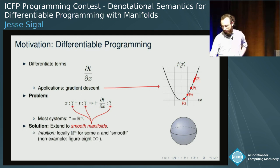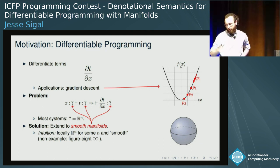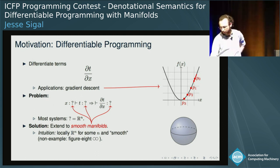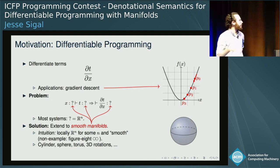Intuitively, what is a smooth manifold? Locally, it's R to the N, and in some intuitive sense, smooth. For example, the sphere. A non-example is a figure eight, because of the meeting point — it's a cross, so it's not the right shape. Other examples are an infinite cylinder, sphere, torus, and a more interesting example is the space of 3D rotations.